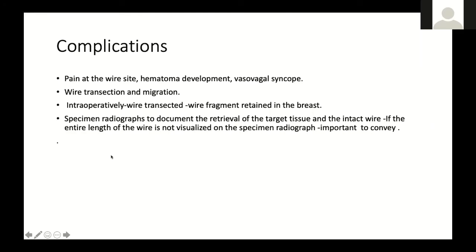It is a very safe procedure, and complications are rarely encountered. However, the radiologist and surgeon should be aware of them. The patient may experience pain at the wire site, hematoma development, or vasovagal syncope. Wire transection and migration have also been reported. Intraoperatively, the wire can get transected and a piece retained in the breast. It is therefore important to take specimen radiographs to document retrieval of the target tissue and the intact wire. If the entire length of the wire is not visualized on the specimen radiograph, it is important to convey this to the surgeon.